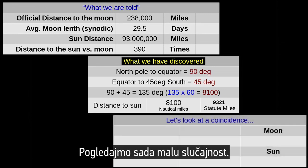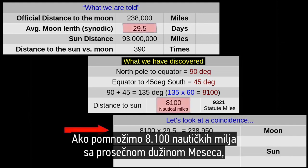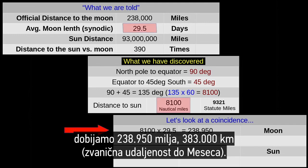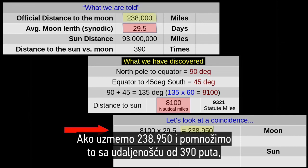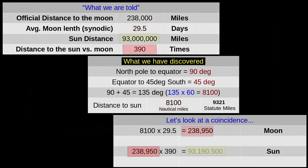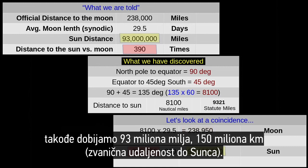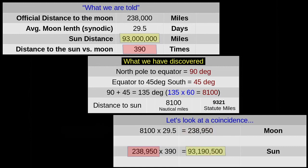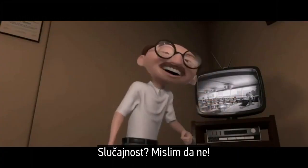So, now let's look at a little coincidence. The 8,100 miles, if you multiply that by the average moon length, comes out to 238,000 miles. If you take the 238,950 and multiply that by the 390 times distance, you also come out with 93 million miles. Interesting. Coincidence? I think not!